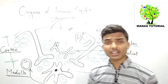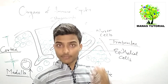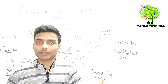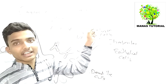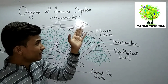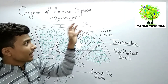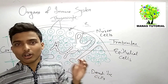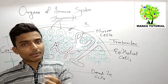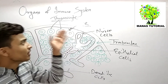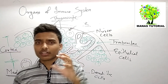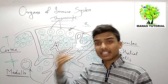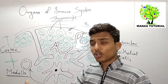Thymocytes give a specialized involvement in which the immature thymocytes bear a unique receptor known as the T-cell receptor. These T-cell receptors are then selected by self-reactivity, or reactivity with self-MHC peptide complexes in the stromal cells.